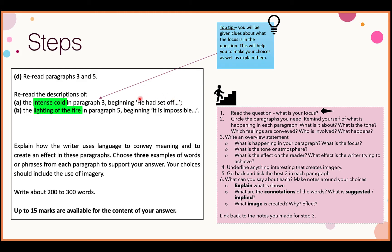My top tip: you will be given clues about the focus in the question. So highlight or underline them. You can think: my focus for paragraph three is the intense cold, so I'm trying to find examples about the intense cold. My focus for paragraph five is the lighting of the fire, so I'm only picking things about that. This helps you be more specific when selecting your examples of imagery.